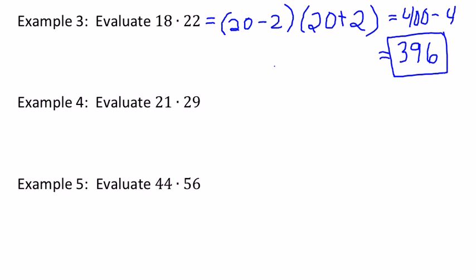Now that's one that you probably didn't know. You probably didn't know that 18 times 22 equals 396. And you didn't need to learn it. You just needed to know that 20 squared is 400 and 2 squared is 4.